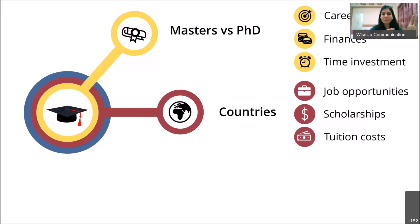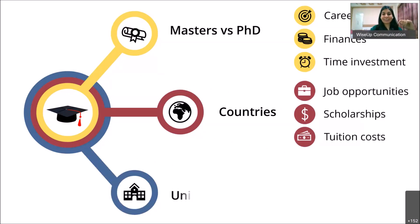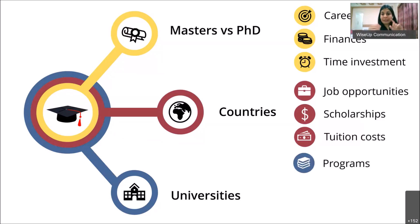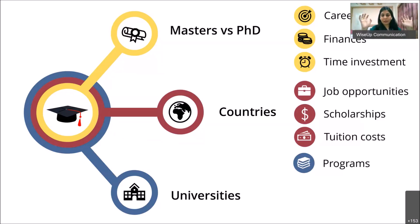Once you've chosen your degree type and countries, the next step is choosing universities, which requires a lot of research. First, look at programs. Universities offer many different kinds of programs — Masters of Science, Masters of Engineering, professional masters, and more. Carefully understand what each program requires and what it offers.